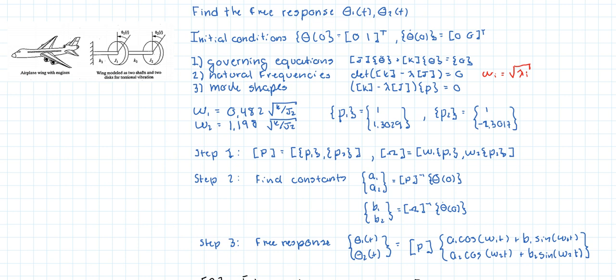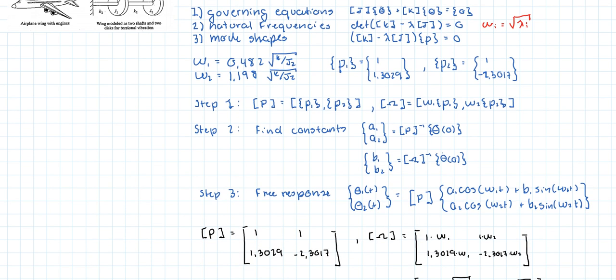In the last video, what we did is that we calculated the mode shapes. Again, we have two mode shapes because we have two degrees of freedom. We also have two natural frequencies. So the natural frequencies are here and the eigenvectors that we found are here.